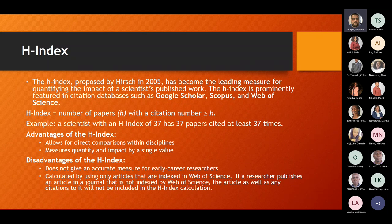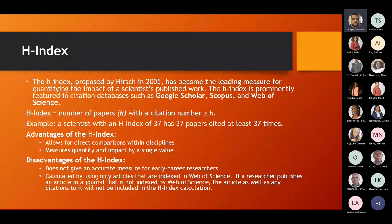The most commonly accepted scoring method in research is the h-index, proposed by Hirsch in 2005. It has become the leading measure for quantifying the impact of a scientist's published work. The h-index is prominently featured in citation databases such as Google Scholar, Scopus, and Web of Science. The h-index equals the number of papers h with a citation number greater than or equal to h. For example, a scientist with an h-index of 37 has 37 papers cited at least 37 times.